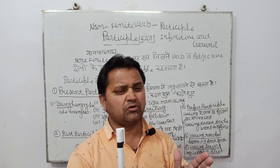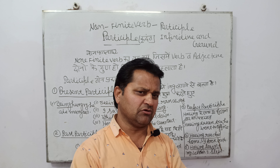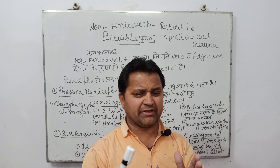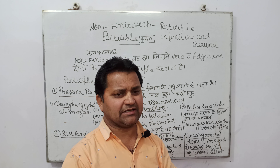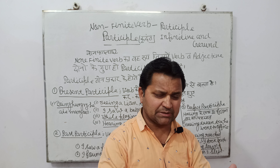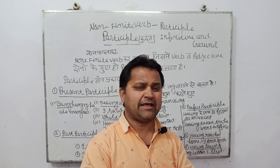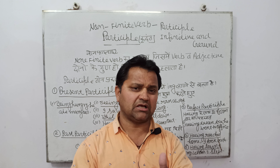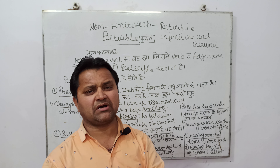I saw a wounded soldier — maine ek ghayal sipahi dekha. Ismein 'wounded' jo hai, wo past participle hai, kyunki third form hai aur uski dasha kya hai, wo ghayal hua hai. I found my lost pen — mujhe mera khoya hua pen mil gaya. Is sentence mein 'lost' khoya hua, past participle hai. Ab perfect participle — having ke baad third form lagane se banta hai, aur arth nikalta hai 'baad' ya 'pashchat'. Having taken his gun, he went to the forest — apni bandook lekar woh jungle chala gaya. Yeh perfect participle hai.